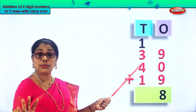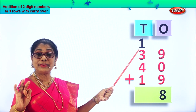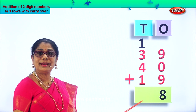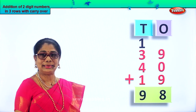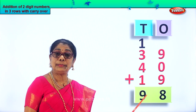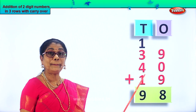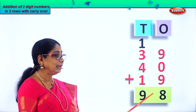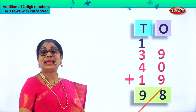One plus three is four. Four plus another four: five, six, seven, eight. Eight plus one is nine. So we put the nine down — nine tens. Thirty-nine plus forty plus nineteen gives you the answer ninety-eight, which is nine tens and eight ones.